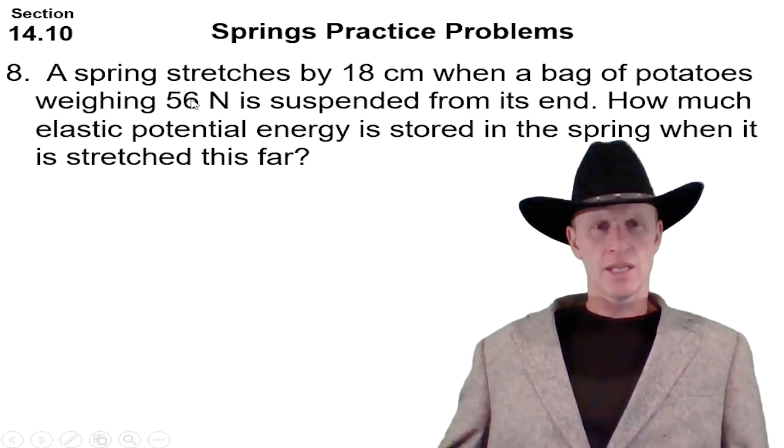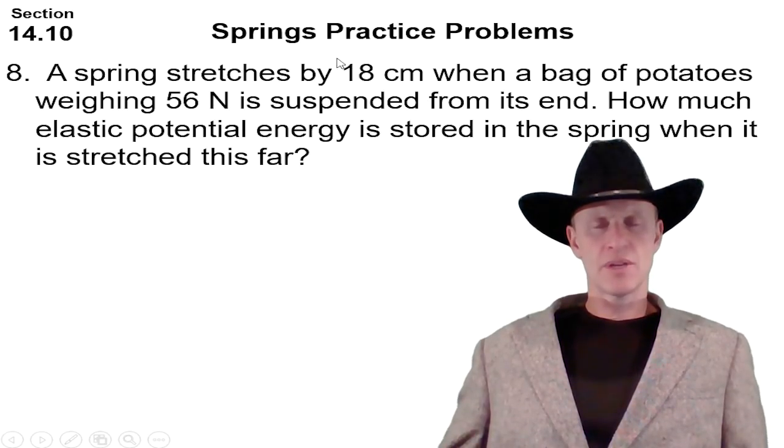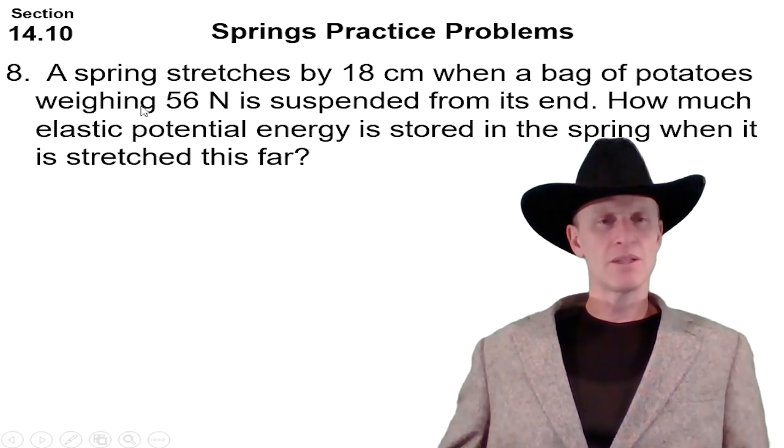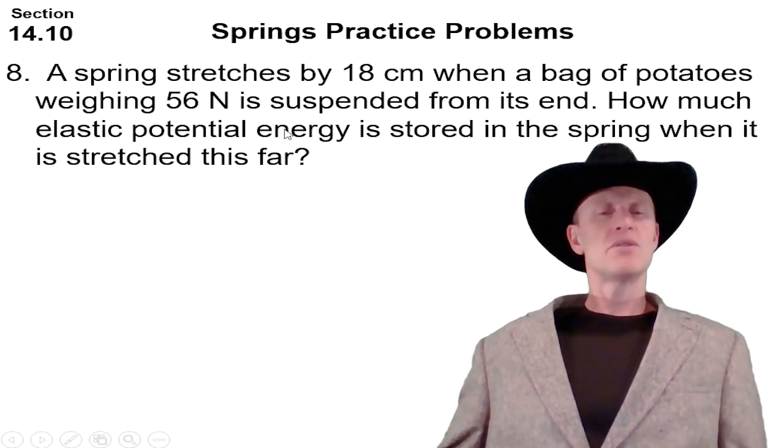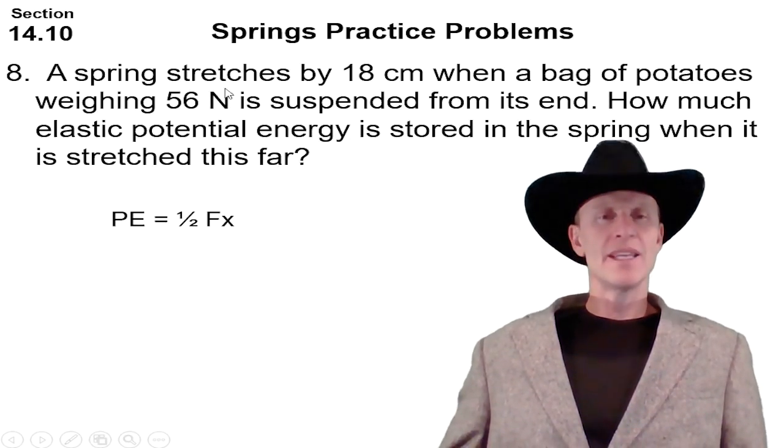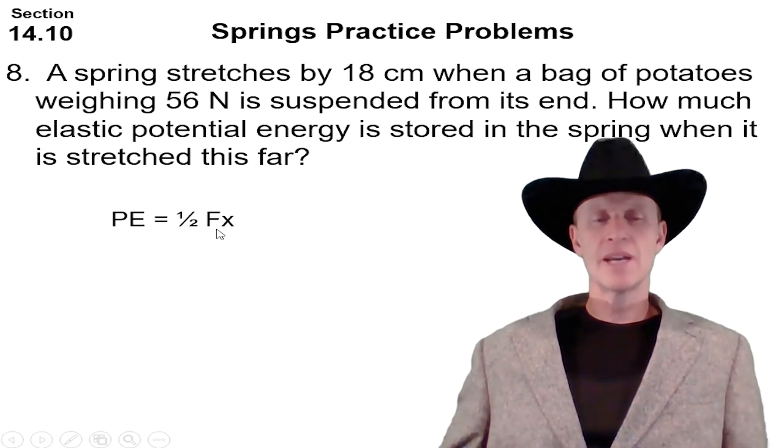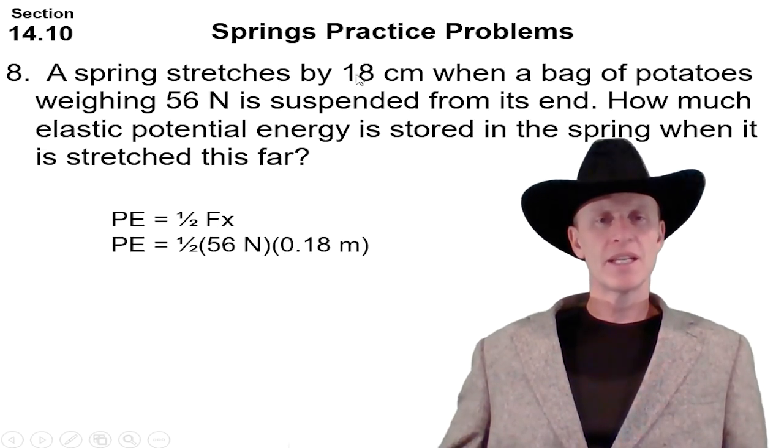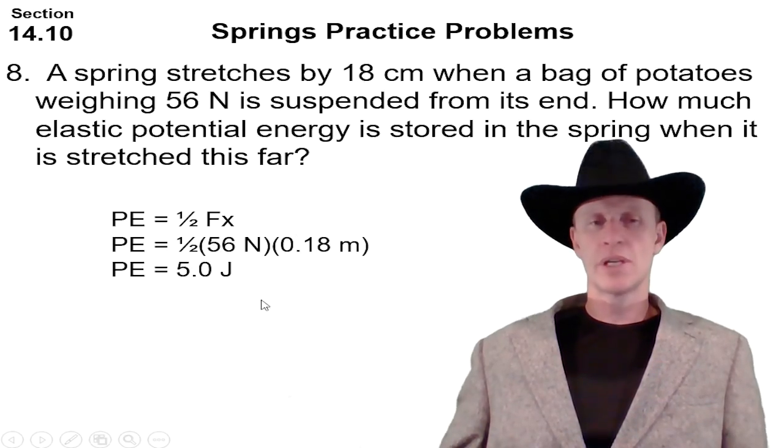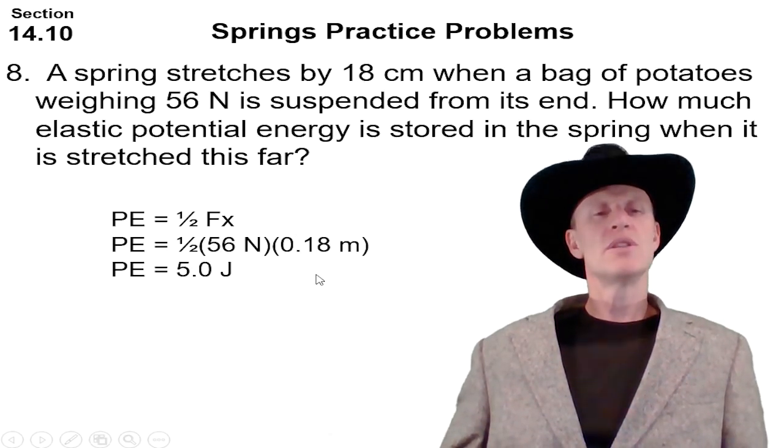Let's look at one more. A spring stretch by, that's your x, the stretches at 0.18 meters, bag of potatoes weighing 56, that's your F. How much potential energy, elastic potential energy, is stored in the spring when it's stretched this far? Well, given the F and the x, we want to use the other formula for PE: one half Fx. Put the 56 in there and put 0.18 in and multiply across. We get 5.0 joules.